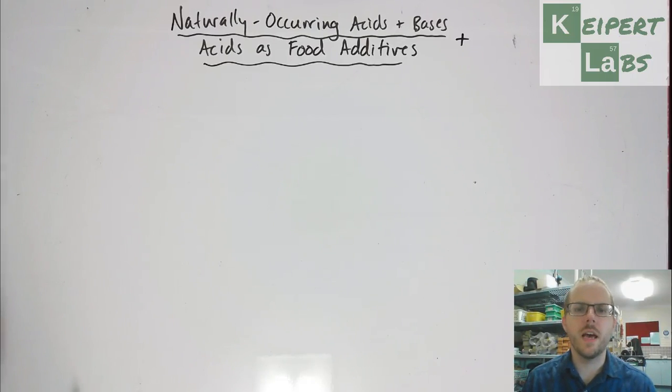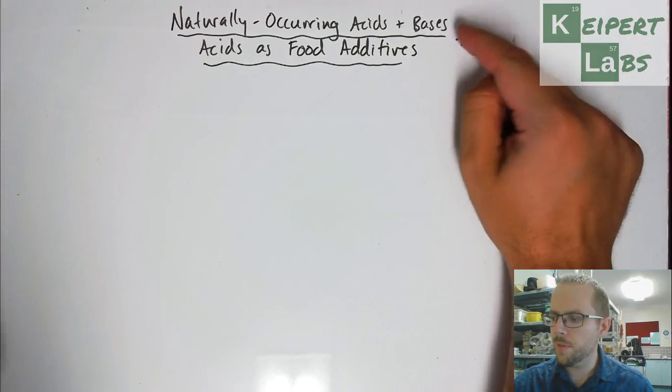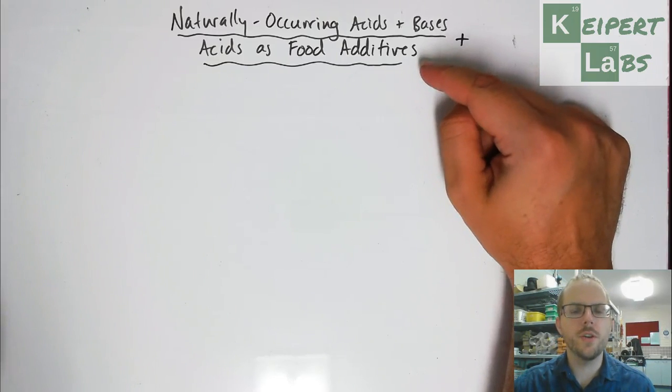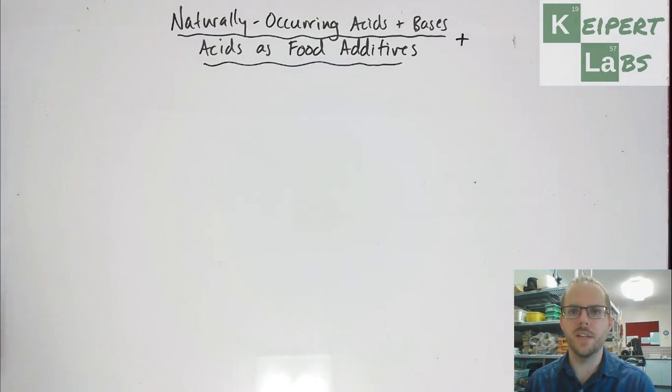Hi everyone, welcome to this doubleheader episode of Kaiput Labs. And in this, I'm just going to go through a quick bit of information. Firstly, we're going to be looking at naturally occurring acids and bases. And then we're going to look at the concept of acids as food additives.